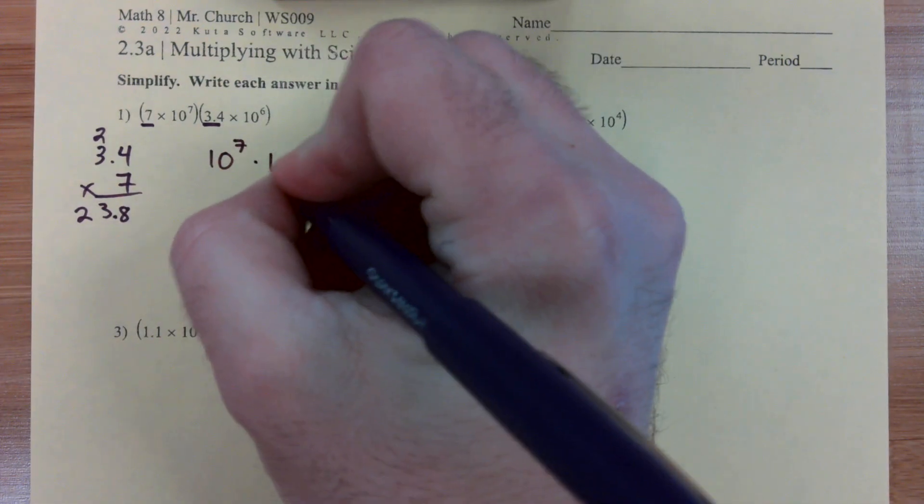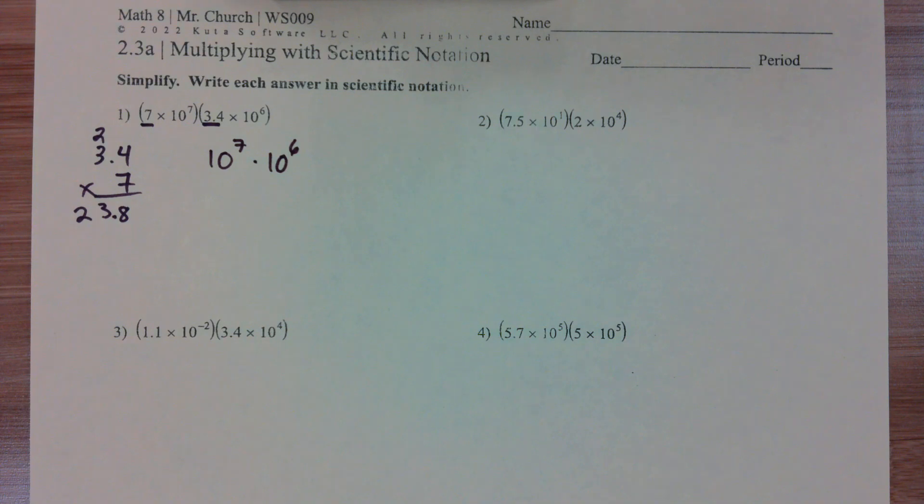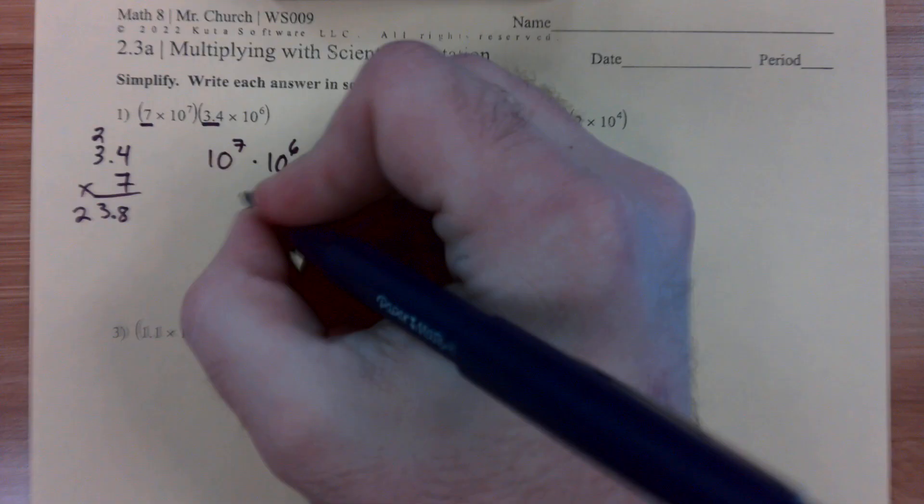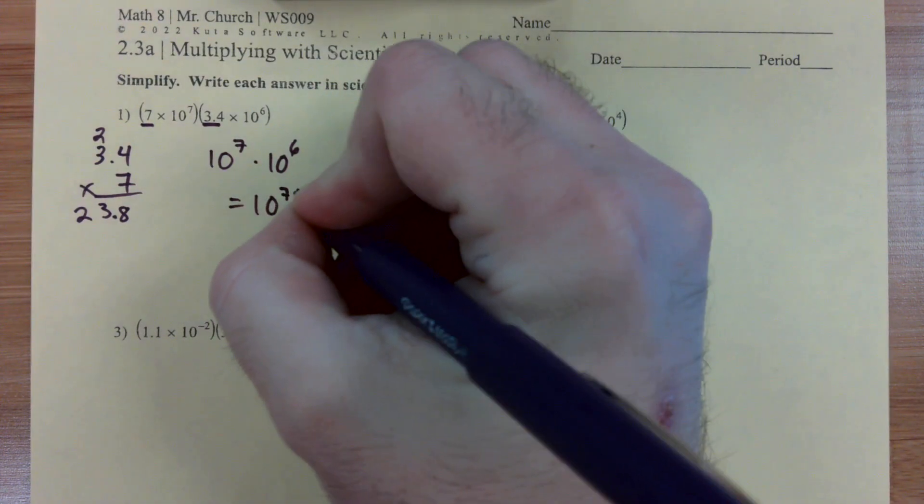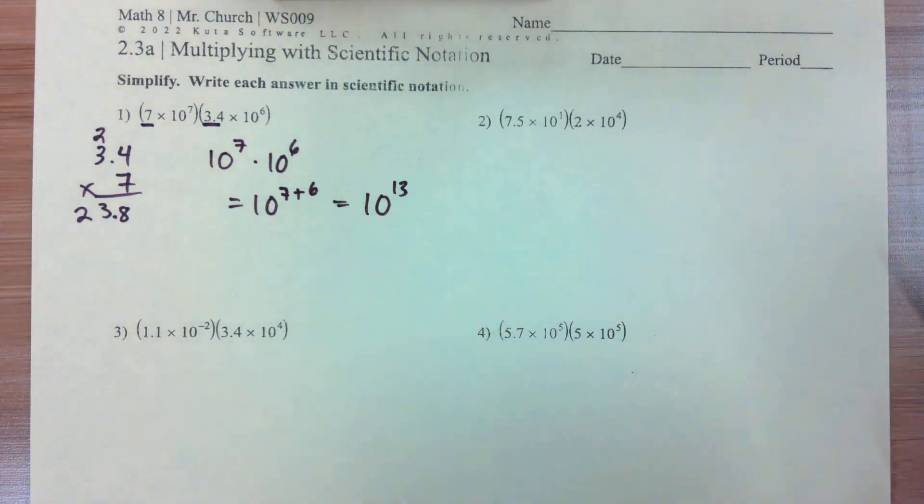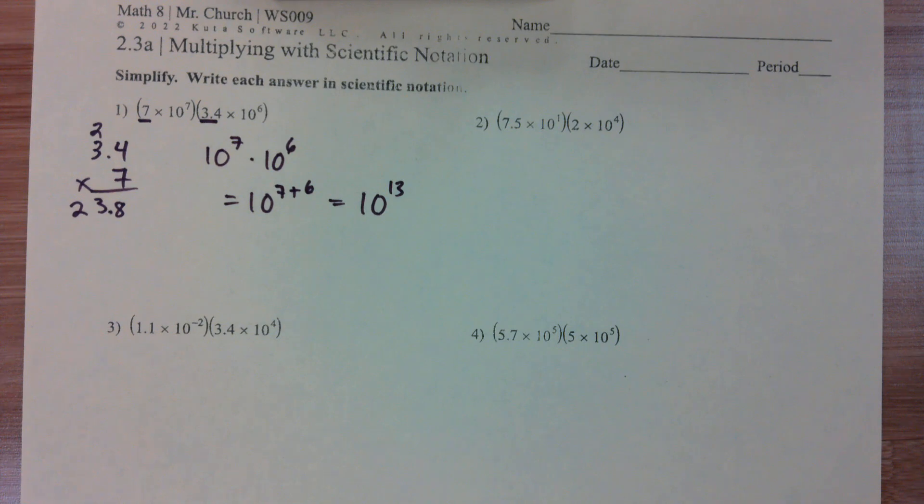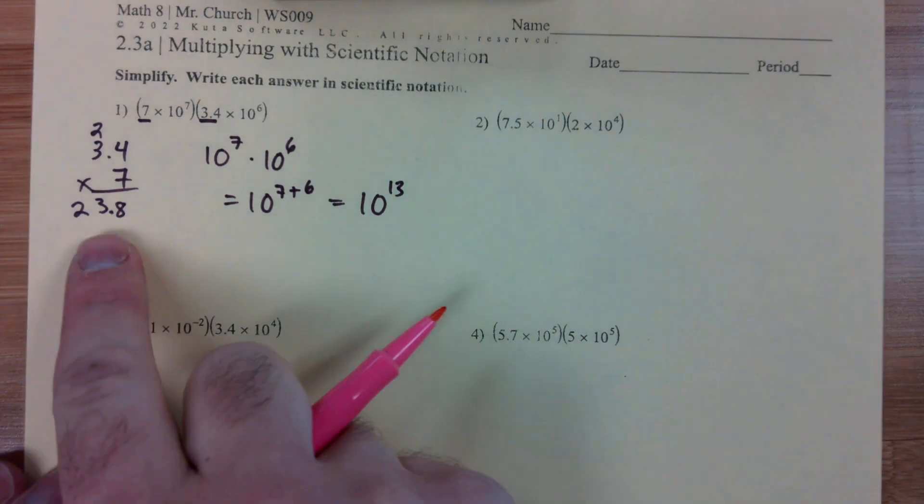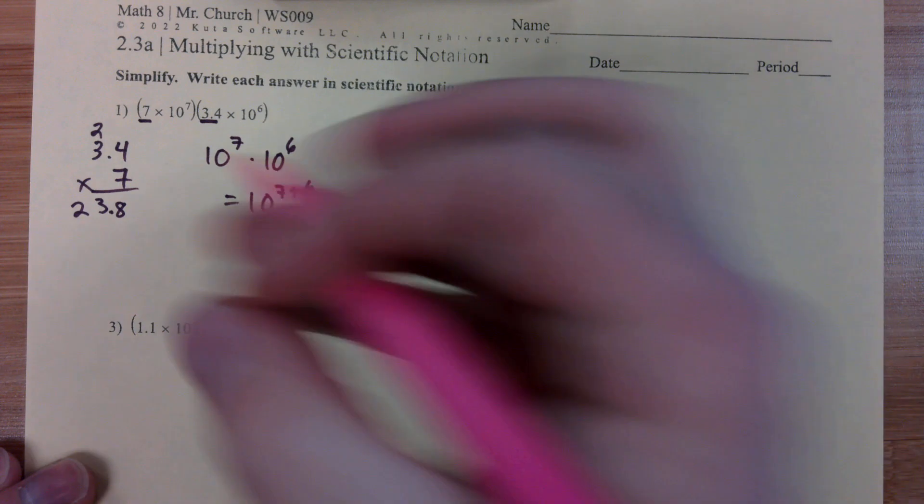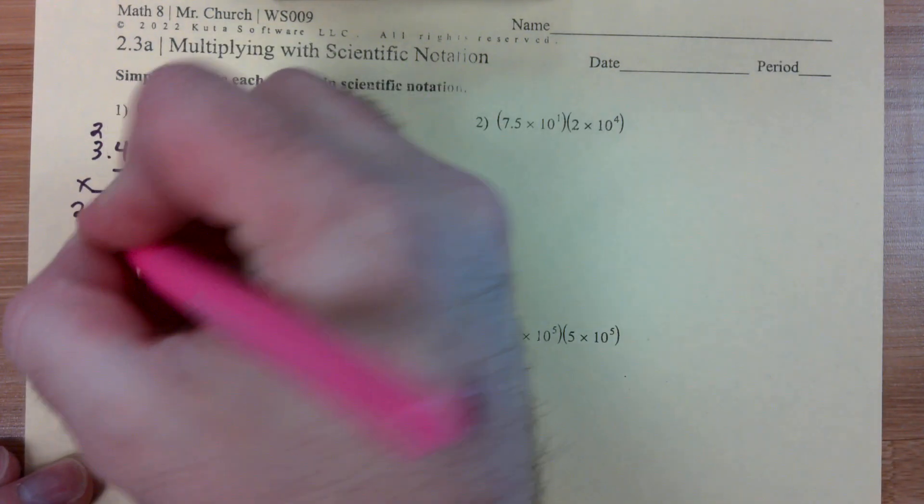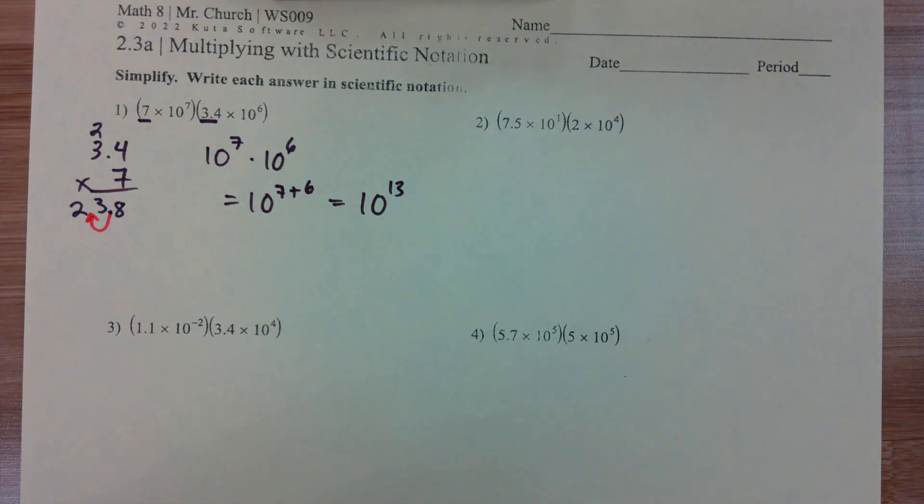10 to the 7th times 10 to the 6th gives us 10 to the 7 plus 6, which is 10 to the 13th. Right? We're almost done. We're going to have to move this decimal that's in 23.8. We only want one number to the left of our decimal. So we're going to move this over one.